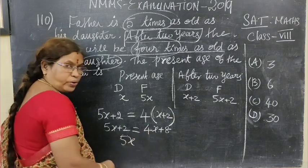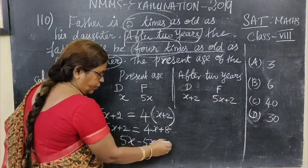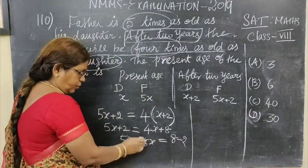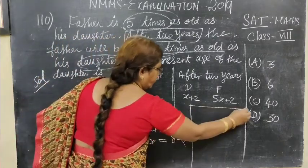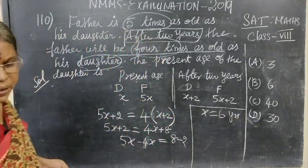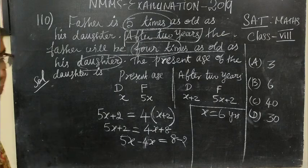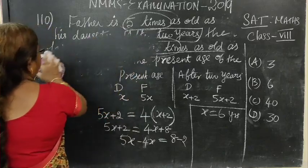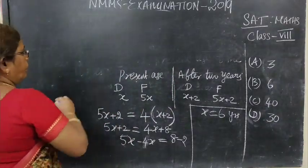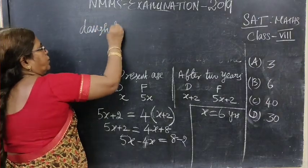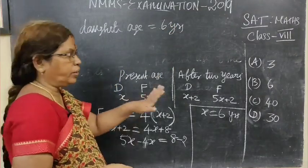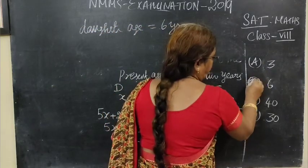Therefore, 5X plus 2 equals 4X plus 8. Rearranging: 5X minus 4X equals 8 minus 2. Therefore X equals 6. The X is the daughter's age. So the daughter's age equal to 6 years. Option B is correct.